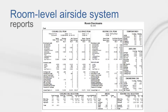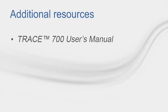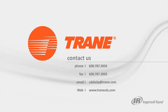To finish up, after calculations have been completed, you would want to look at the system component selection report or room checksums for all coil and fan sizing information. Also note, some of the numbers in the zone checksums may not equal the straight addition of the same numbers in the room checksums, because the room checksums report shows each room at its individual peak time, not a zone peak time. This video has covered why zoning is important and how to do it properly for all levels of air side systems. For more information, you can check out the TRACE User's Manual, page 325, or in the program with F1 help. Thanks for watching. Have a nice day.